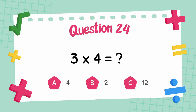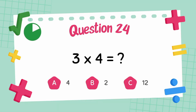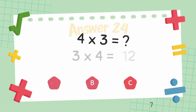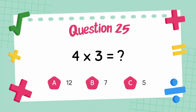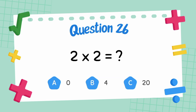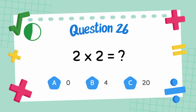What is 3 multiply 4? The answer is 12. What is 4 multiply 3? The answer is 0. What is 2 multiply 2? The answer is 4.